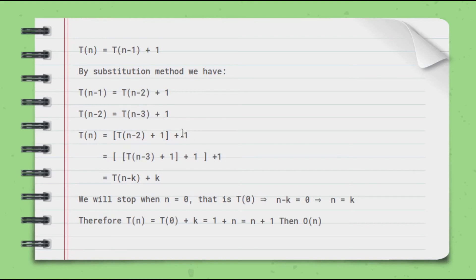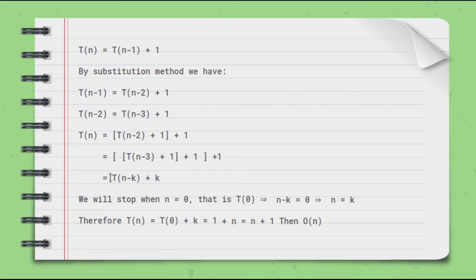If we continue this pattern to some k-th step, we notice that T(n) = T(n-k) + k. For the first substitution we had T(n-2) + 1, for two substitutions T(n-2) + 2, for three substitutions T(n-3) + 3. In general, T(n) = T(n-k) + k.